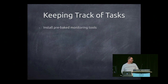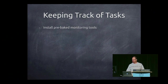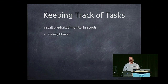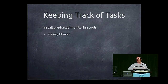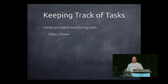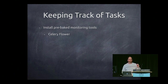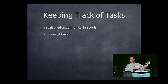First, keeping track of tasks. Install the pre-baked monitoring tools. For Celery, this is Celery Flower. This allows you to see what tasks are running right now and what tasks have run recently. You can get some charts to see how well the system is performing, when it's been peak periods. It's an easy-to-install tool — just a pip install away — to be monitoring your tasks.